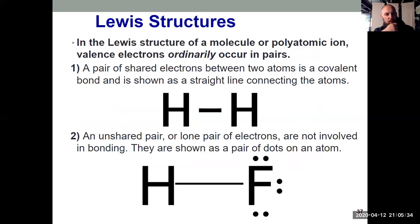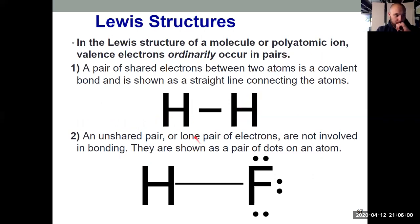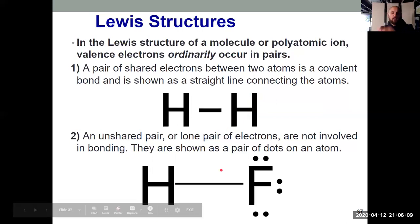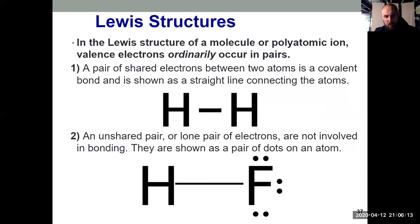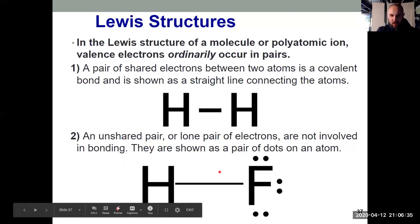Here we see some Lewis structures for H2 and HF. Most of the time, electrons in Lewis structures occur in pairs. Those pairs can show up in one of two ways: in a bond, shown as a straight line between two atoms, or unshared as lone pairs — just two dots belonging to only that atom. Here I have a lone pair belonging only to fluorine, not involved in bonding, whereas the bonded pair belongs to both hydrogen and fluorine simultaneously.